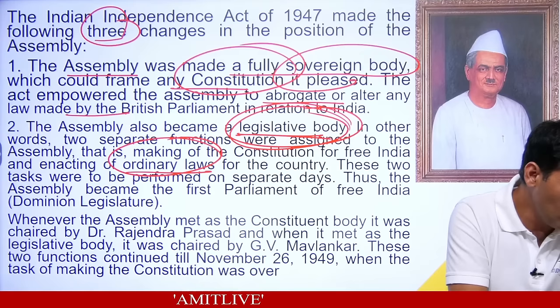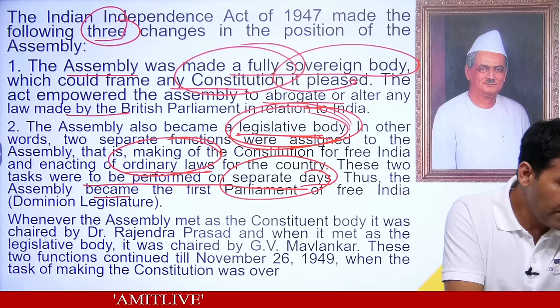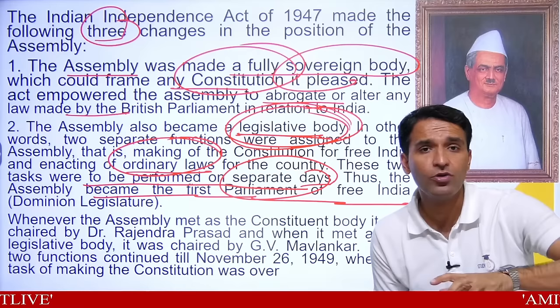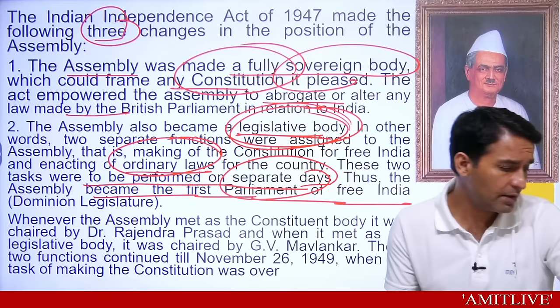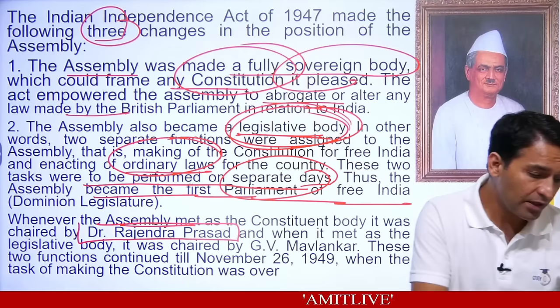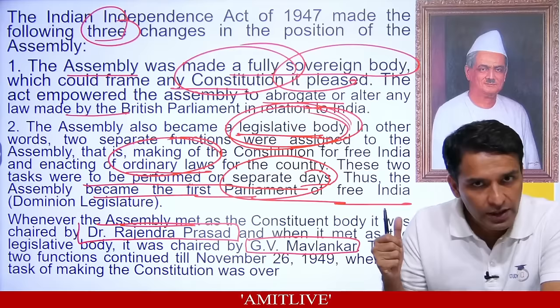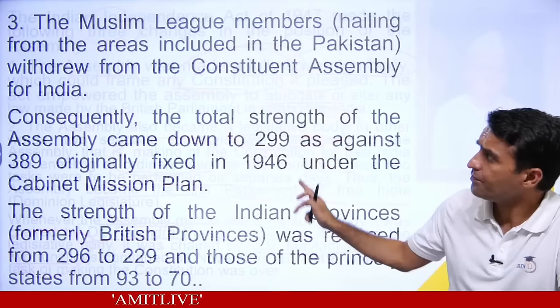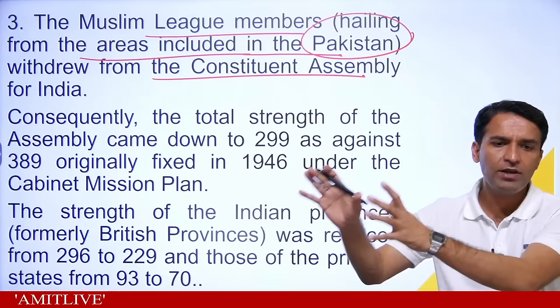The assembly had two functions: making the constitution, chaired by Dr. Rajendra Prasad; and making laws, chaired by G.V. Mavalankar. Both functions continued until the constitution was made. Muslim League members from areas included in Pakistan left India's Constituent Assembly and joined Pakistan's. Consequently, the total strength of the assembly came to 299, as against the original 389.